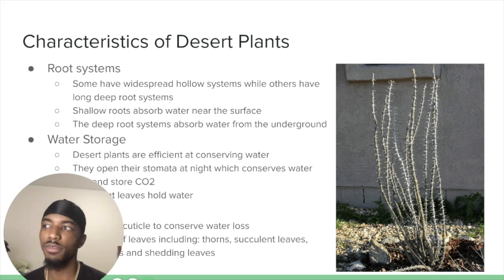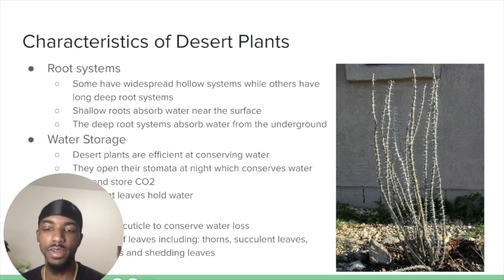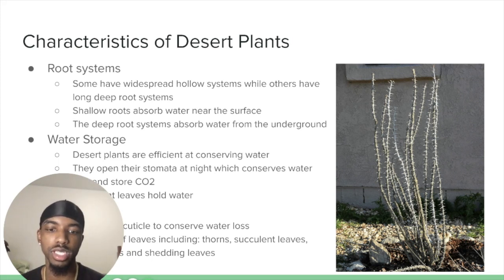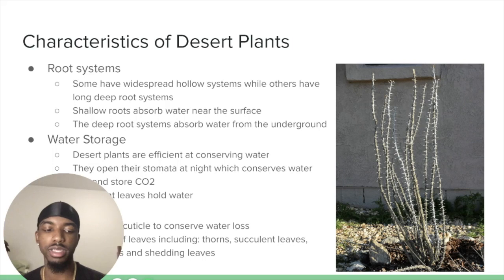Desert plants also have thick cuticles that are very waxy, making it hard for water to be lost through the leaves. Other leaf adaptations include thorns, succulent leaves, shedding of leaves, and hairy leaves.